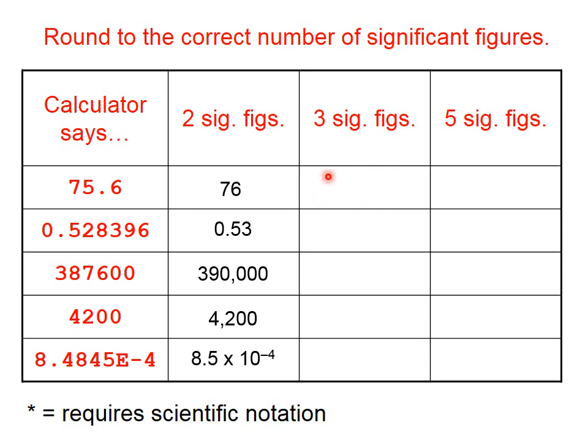How about this box? If we need to round 75.6 to three significant figures, well, that's easy. It already has three.